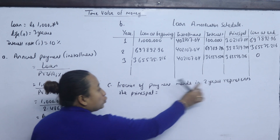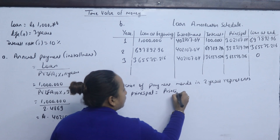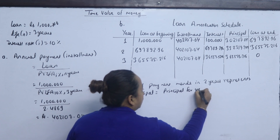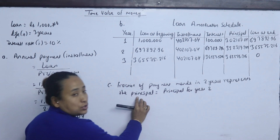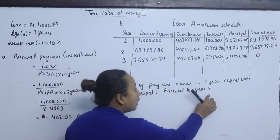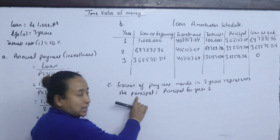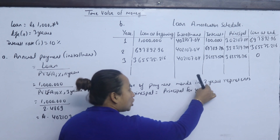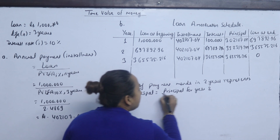The principal for year 2 is 332,317.744. To find the fraction, we divide the principal for year 2 by the total installment payment for year 2. This gives us the proportion of the payment that represents principal repayment.